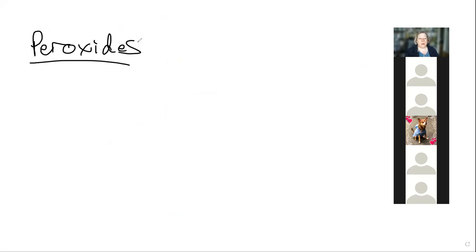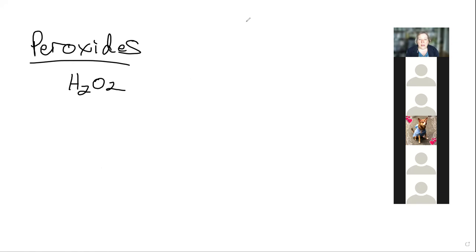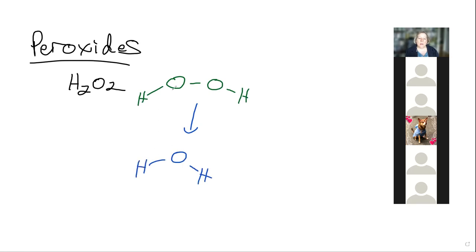Peroxides are a class of chemicals that has really exploded recently. The most familiar is hydrogen peroxide — essentially water with an extra oxygen (H₂O₂). It's a very unstable configuration that wants to break down, and when multiple molecules are in solution, they break down to water plus oxygen.